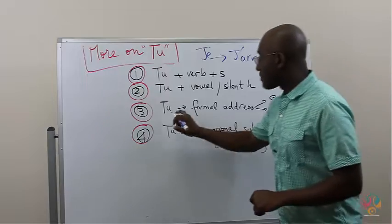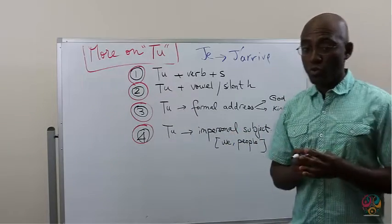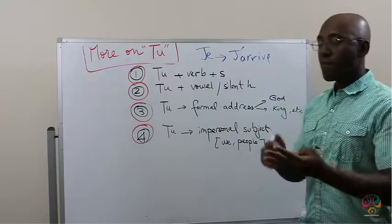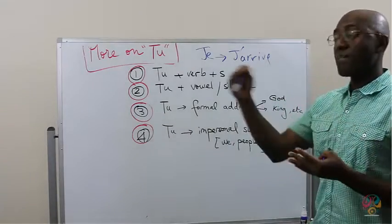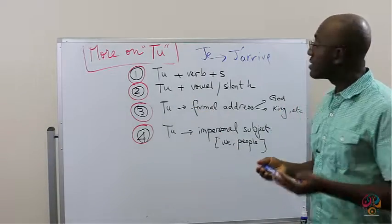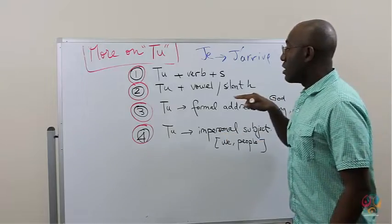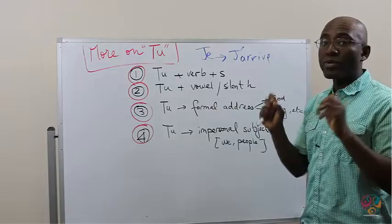Number three, TU. One thing that we learn when we learn TU is that TU is used for friends or people of the same age, for colleagues, for family members. So, TU is very informal. It's informal. Well, guess what? You will find TU used as a formal address.